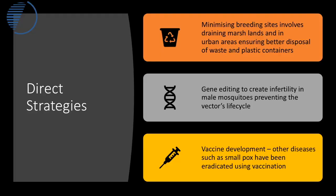Direct strategies could include removal of sites where mosquitoes can breed. Mosquitoes only breed in stagnant water, so if you remove stagnant water from the environment by draining or removing plastic containers, you could reduce the spread.